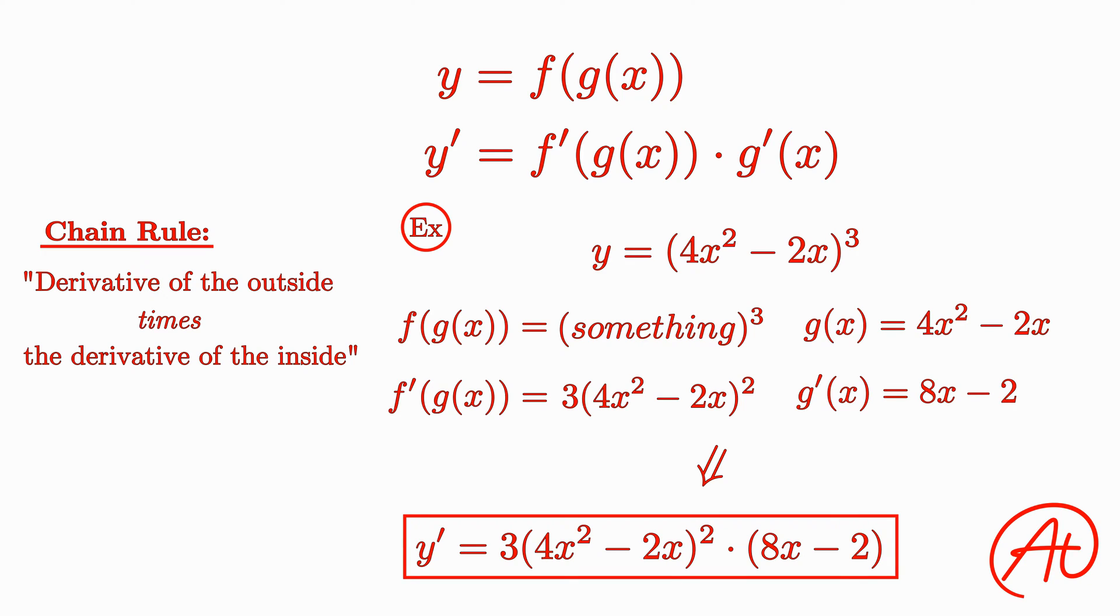Alright, now let's look at a more complex example. Say we want to find the derivative of a function like this. Unlike the last example, this equation has 3 layers. To reiterate, no matter how many nested functions we have, all we have to do is multiply together the derivatives of all the layers. So for this, let's once again write out what those different layers are.